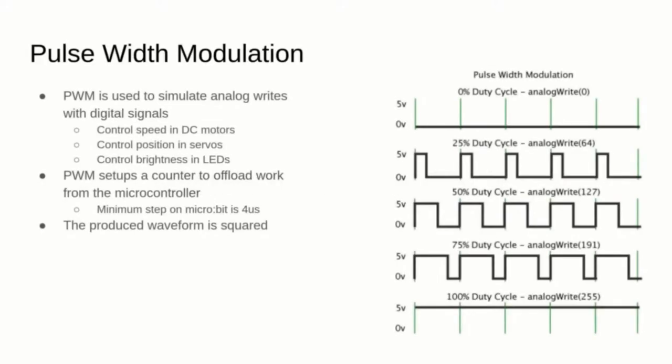Let's start with a simple example on how to play music using a digital pin of the micro:bit. Microcontrollers often have a dedicated internal counter that can be configured to offload some work running in parallel. We can use those counters to configure a pulse-width modulation signal emitted on one of the digital pins. The sound waves will be square, but you can implement a simple RC low-pass filter to make it sound nicer. PWM is also used to simulate analog values to control motor speeds or LED brightness.